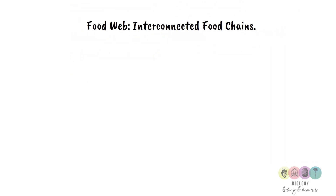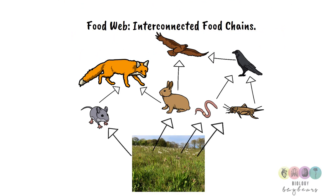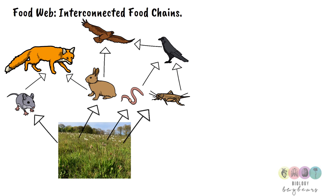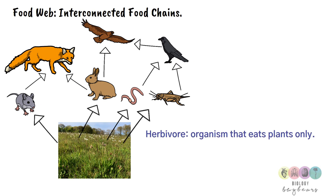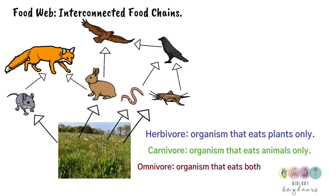A food web is made up of many interconnected food chains. There are also important terms to know: a herbivore is an organism that eats plants only; a carnivore is an organism that eats only animals; and an omnivore is an organism that eats both plants and animals.